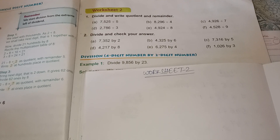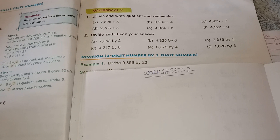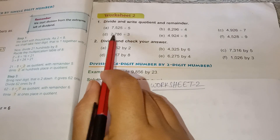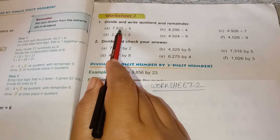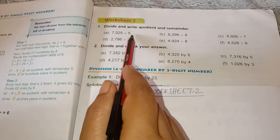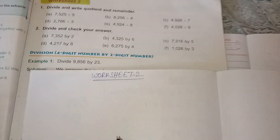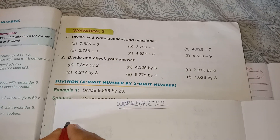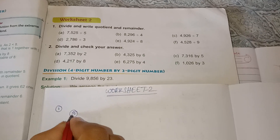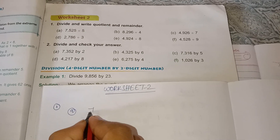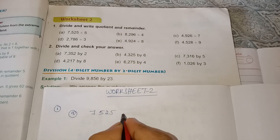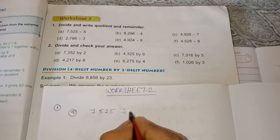Let us solve worksheet 2 problems. Here there are 4-digit by 1-digit divisions. Let us solve 4-digit by 1-digit. First one: 7525 divided by 5.